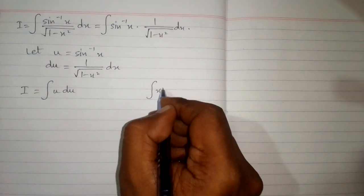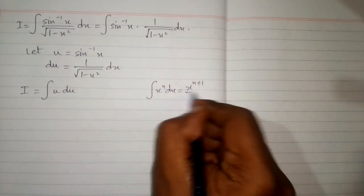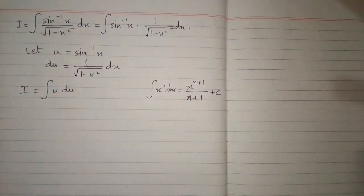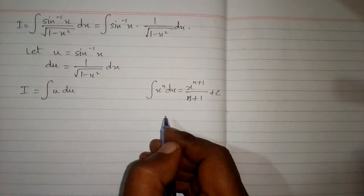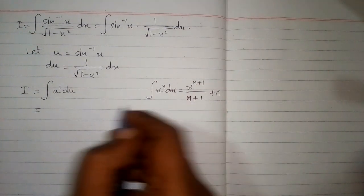Now the integral of x to the power n dx is equal to x to the power n plus 1 upon n plus 1 plus c. This is called the power rule of integration. So here the power of u is 1 and we will apply this formula.